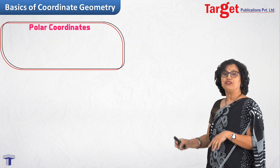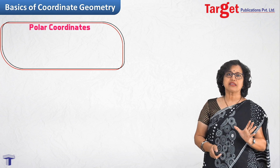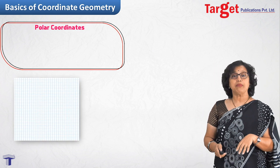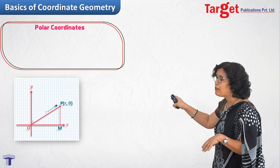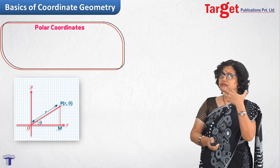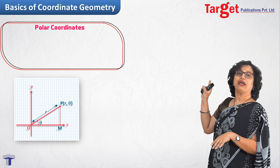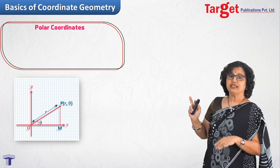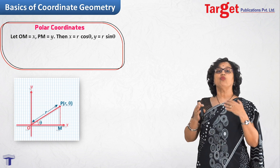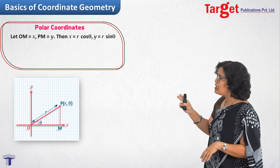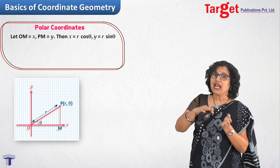Now let us move to a new type of system called polar coordinates — same frame of reference as XY, but coordinates written differently. We draw the same Cartesian axes and show a point P written as (R, θ). Here, θ is the angle made by OP from the X axis in the anticlockwise direction, and R is the length OP. We can then write X = R cos θ and Y = R sin θ.